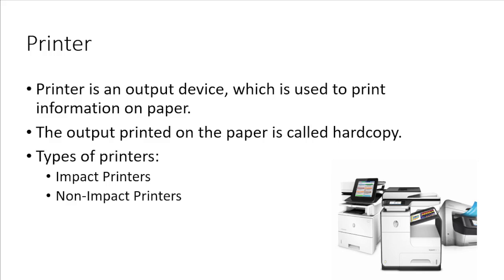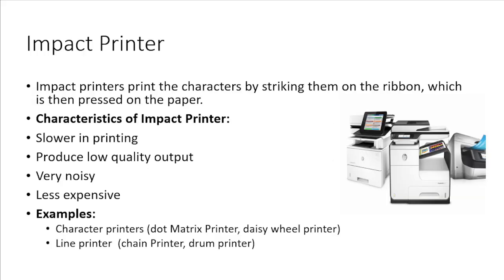Printers are classified into two types: impact printer and non-impact printer. An impact printer is a printer that produces output on paper by striking a print hammer or set of pins against an inked ribbon. It works like a typewriter and uses an electromechanical technique to print output on the paper.